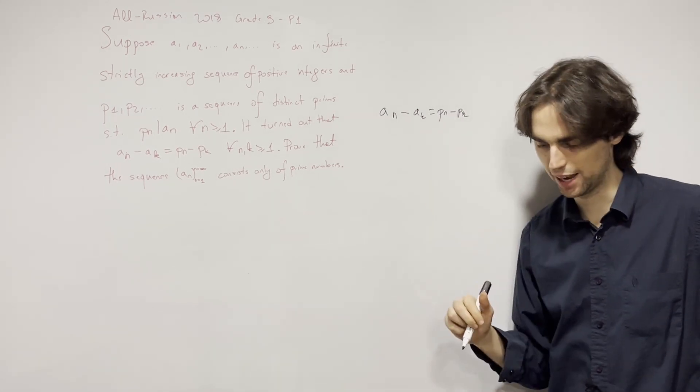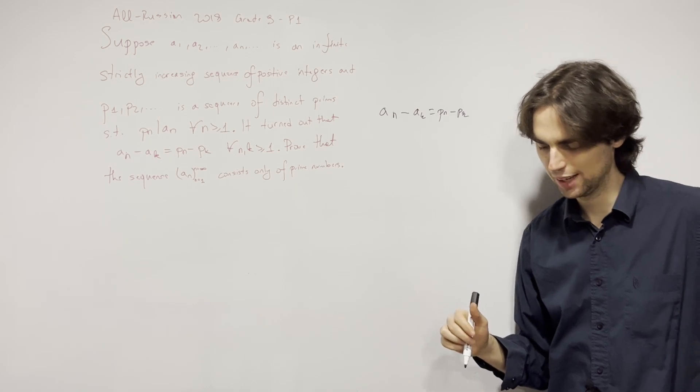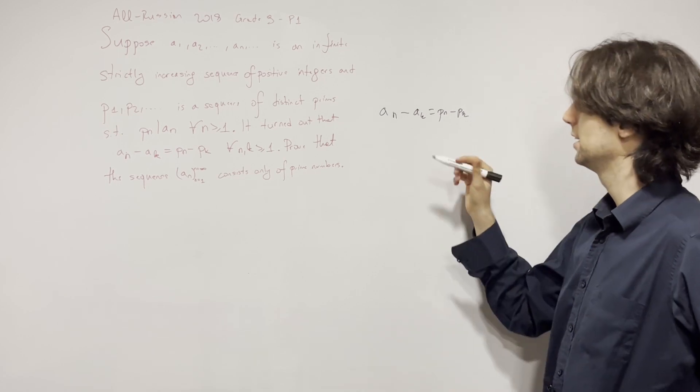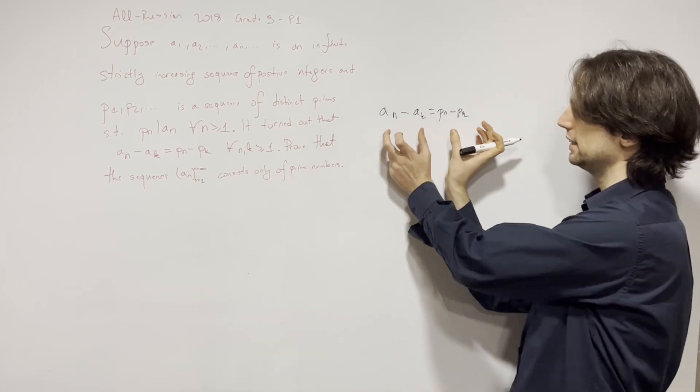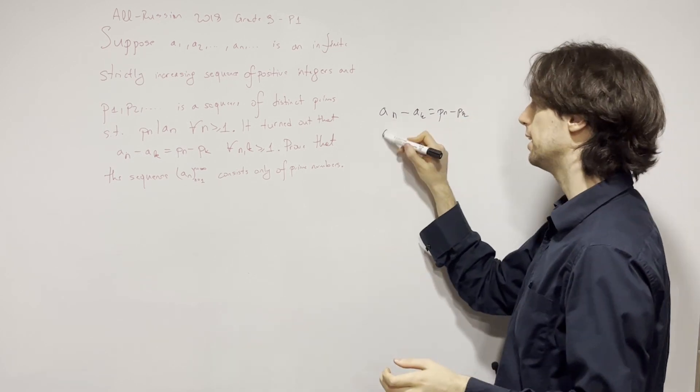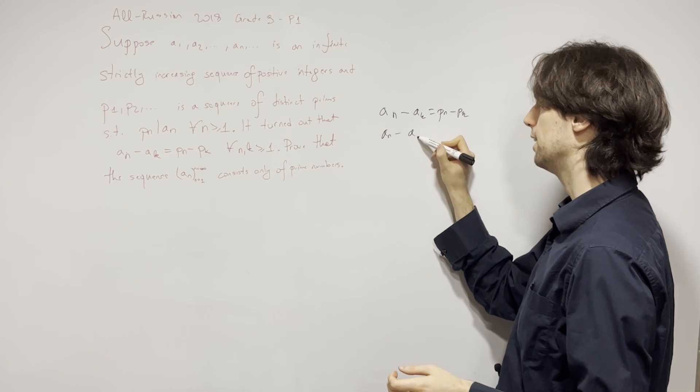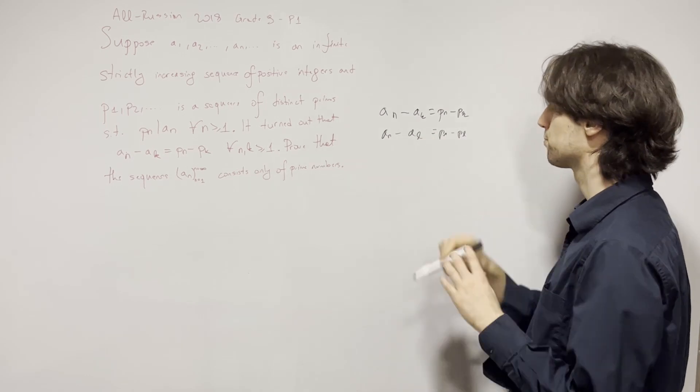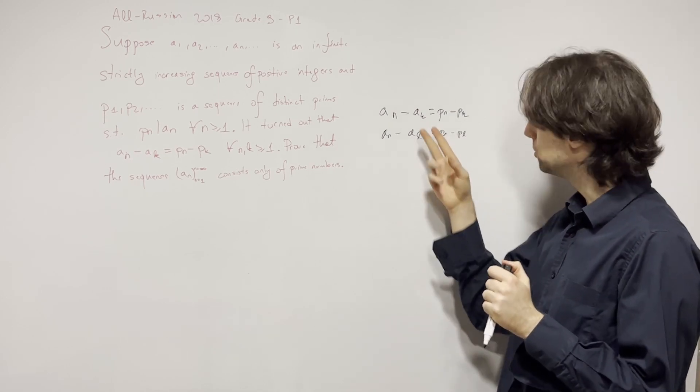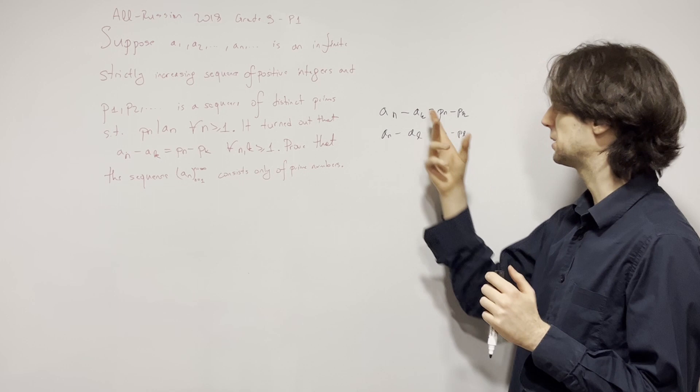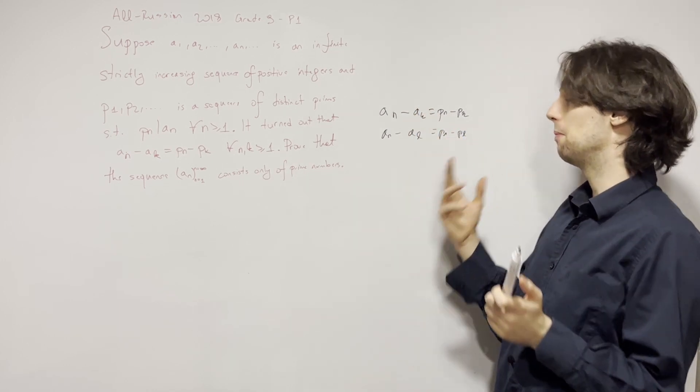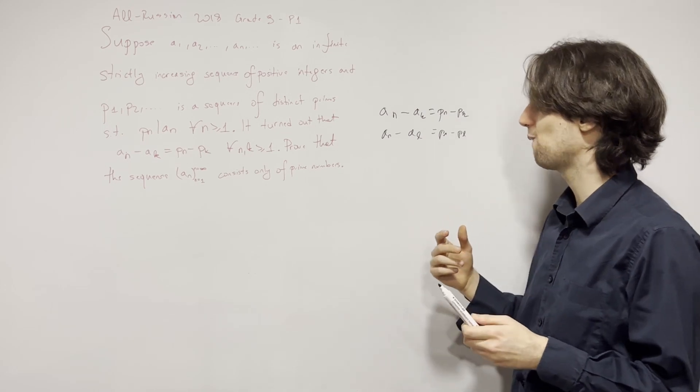This is a somewhat decently common technique. When you have something that depends on two variables, you choose: you can choose a_n minus a_l equals p_n minus p_l. You can maybe combine these two in some way, shape, or form, but you'll get to the same thing.